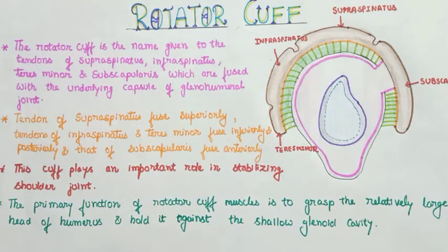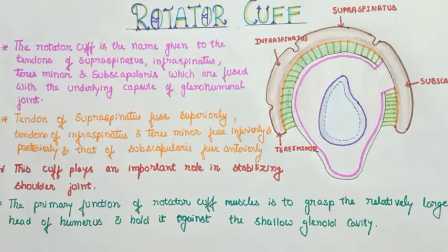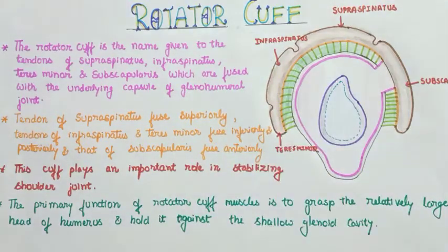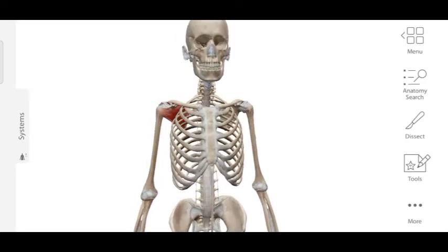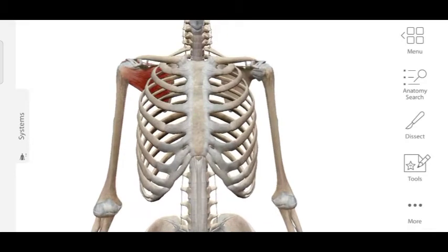Let's first see in 3D where it is located, then we will discuss in detail about the different muscles and the four points you have to remember in this regard. This 3D illustration will help you to easily visualize the different muscles of the rotator cuff.